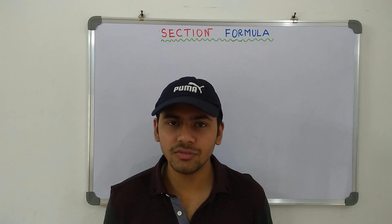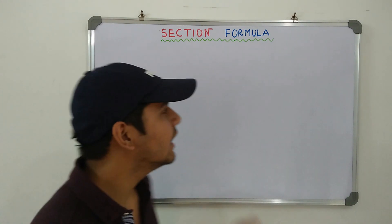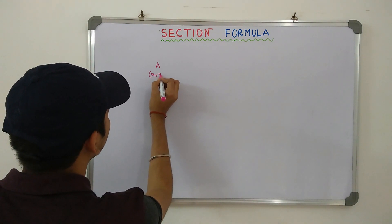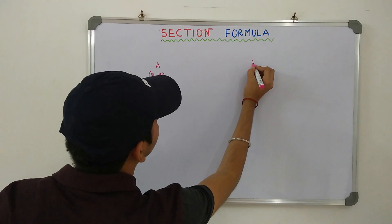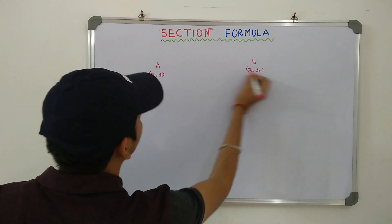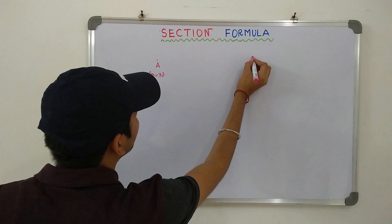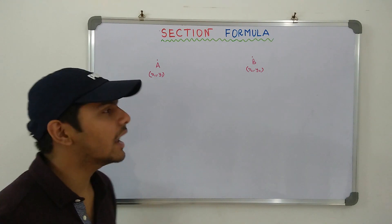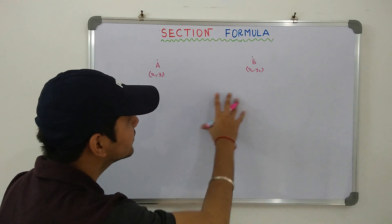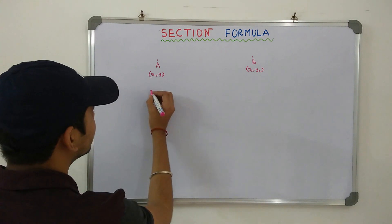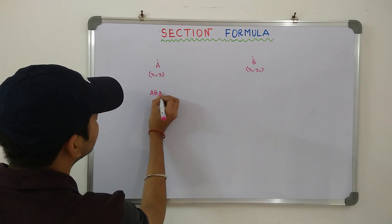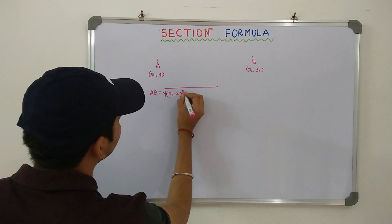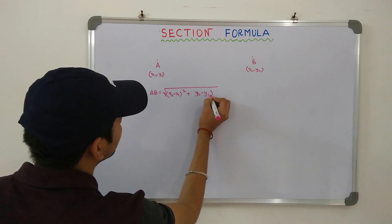First, let's recap with Distance Formula. Now, if two points are given in a Cartesian system — A with the coordinates x1, y1 and B with the coordinates x2, y2 — how do we calculate the distance between these two points? That is what the Distance Formula does. To calculate the distance between two points in the Cartesian system: AB is equal to the square root of (x2 minus x1) whole square plus (y2 minus y1) whole square.